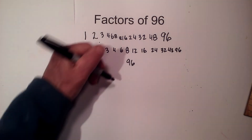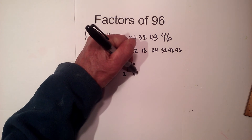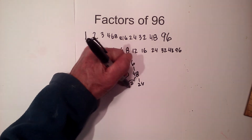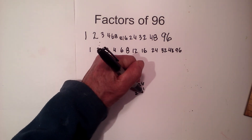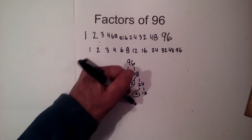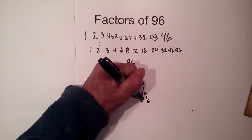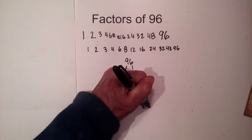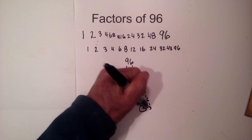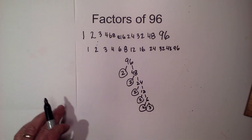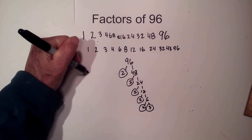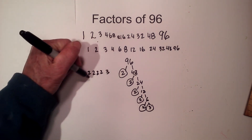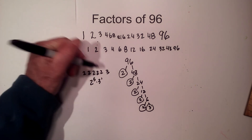2 times 48 equals 96 — circle the 2 because it is prime. 2 times 24 — circle the 2. 2 times 12 equals 24 — circle the 2. 2 times 6 equals 12 — circle the 2. And finally, 2 times 3. Now I'm down to just prime numbers, so the prime factorization is 2 times 2 times 2 times 2 times 2 times 3, or 2 to the 5th times 3 to the 1st.